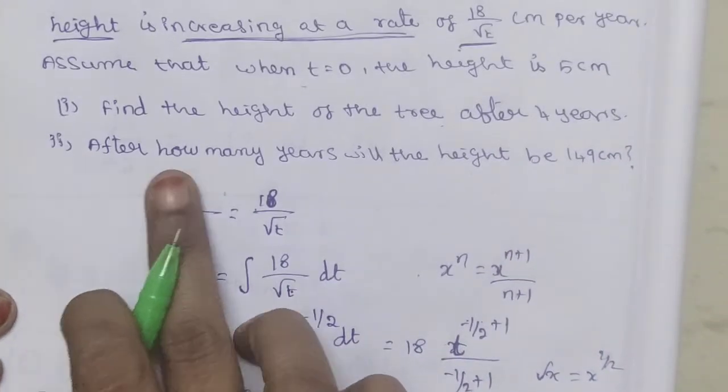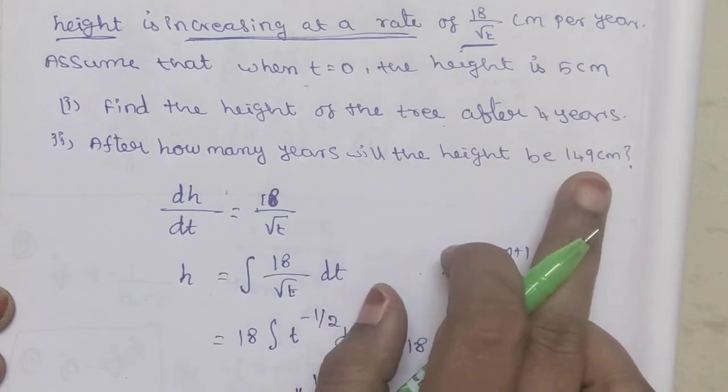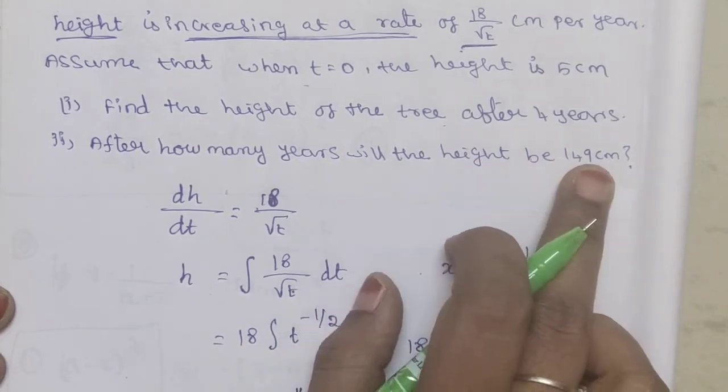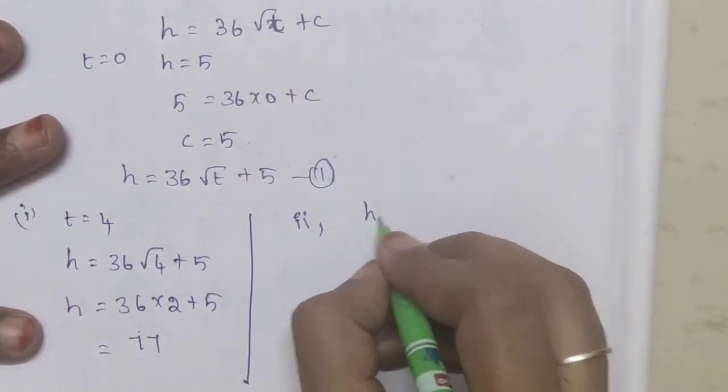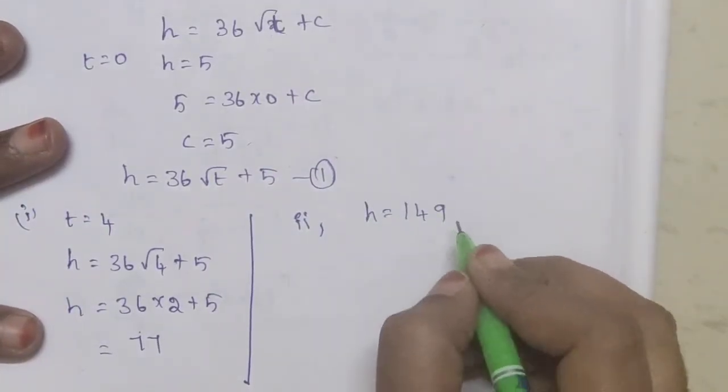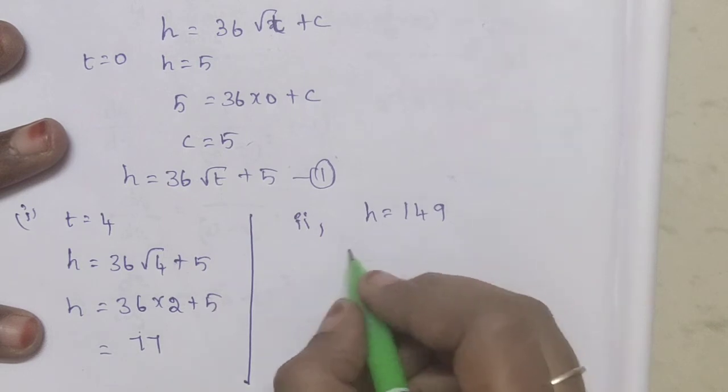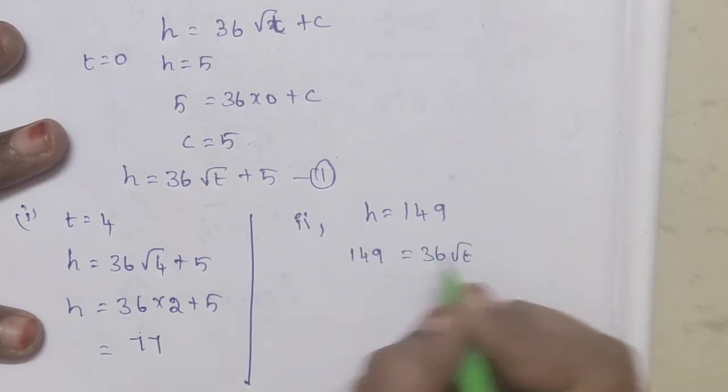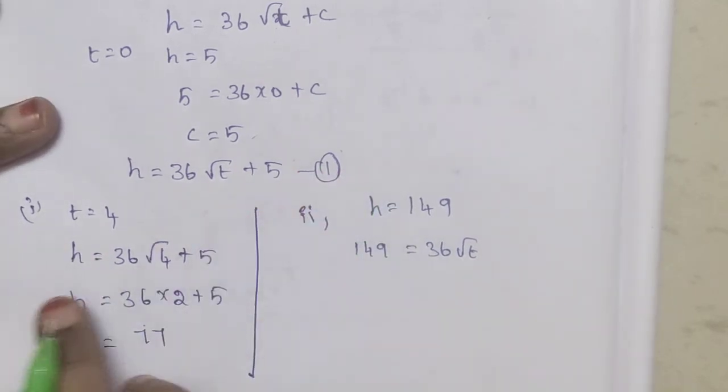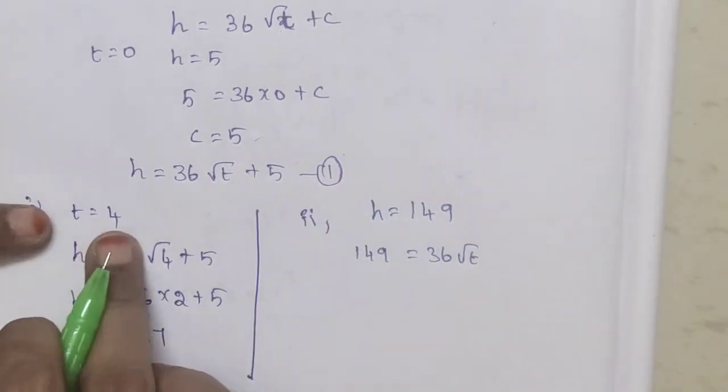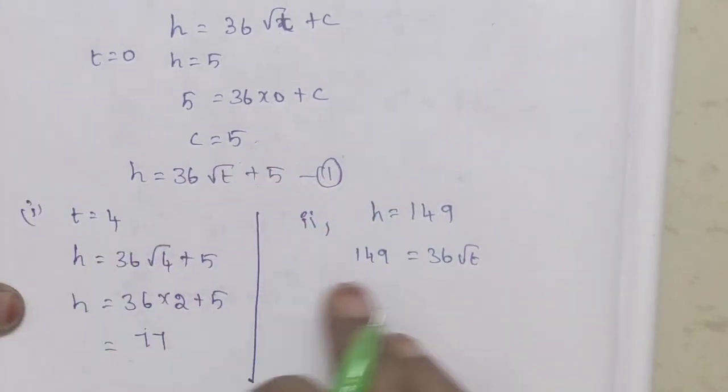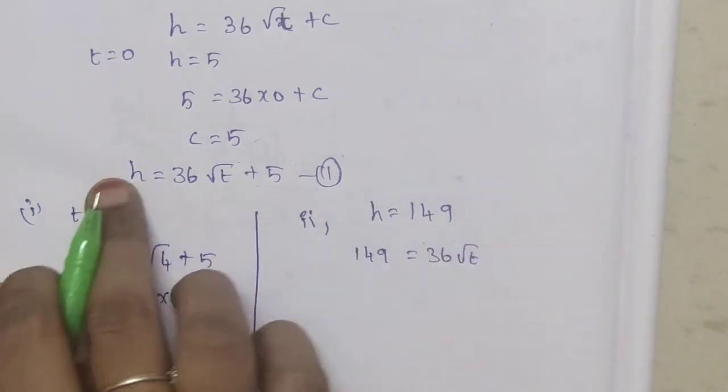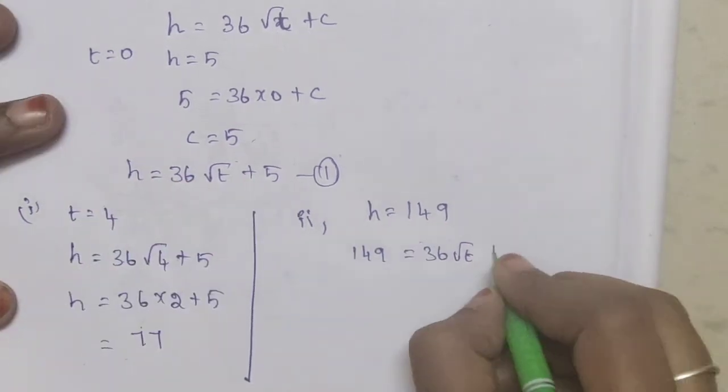After how many years will the height be 149? When height is 149, we have 149 equals 36√t plus 5. Setting up the equation when t equals 4, the height of the tree is 149.